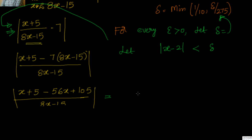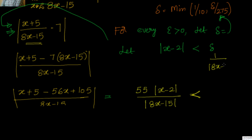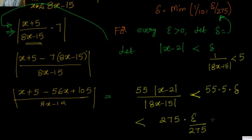This is nothing but 55|x - 2| / |8x - 15|. But we know the max value of 1/|8x - 15| is less than 5. So I can say 55 · 5 · |x - 2|, and I can take |x - 2| as less than delta. That is nothing but 275 · delta. Now delta = epsilon/275, so this is nothing but less than epsilon.